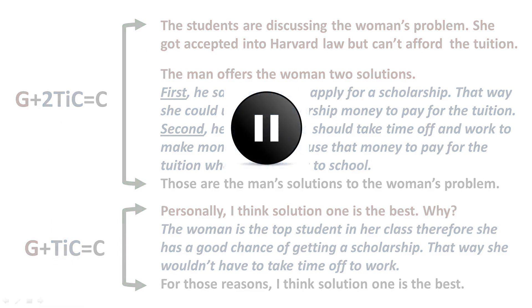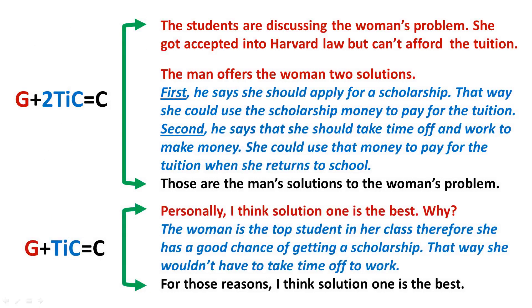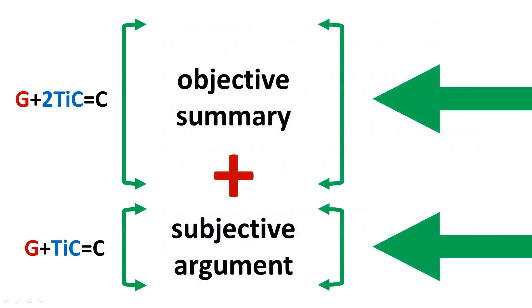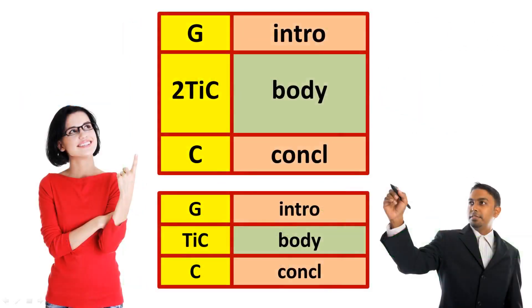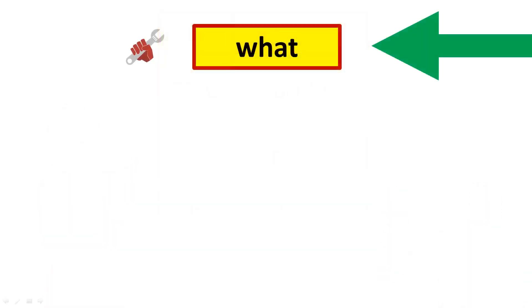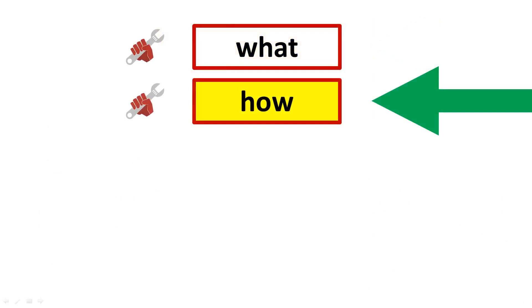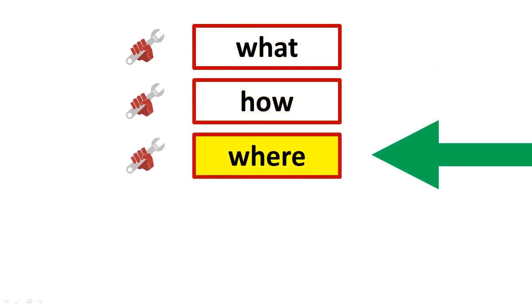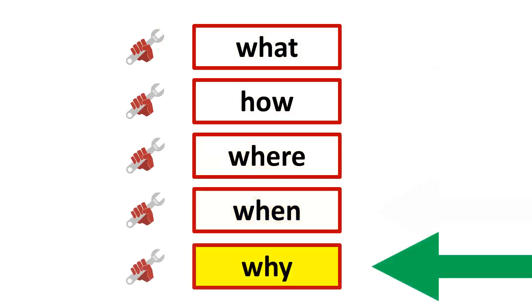By mapping out your response this way, the objective summary and the subjective argument verbally integrate. The speaking raters are trained to listen for this integrated structure. By using G3TICC, you will know what to say, how to say it, where to say it, when to say it, and why — for maximum scoring on test day.